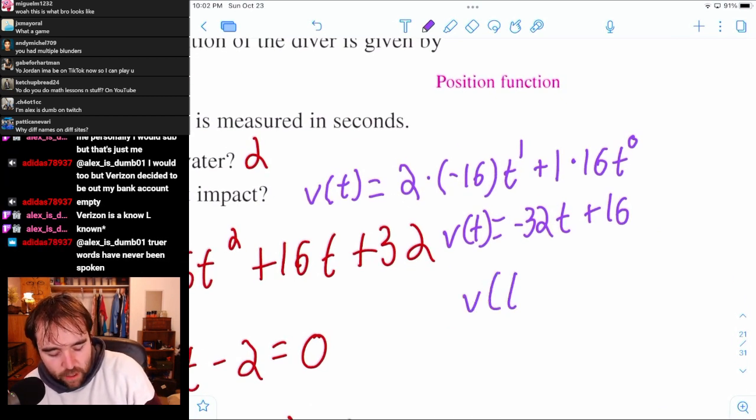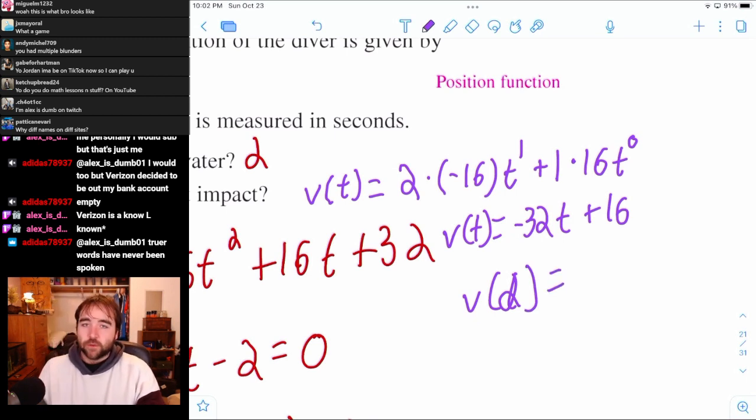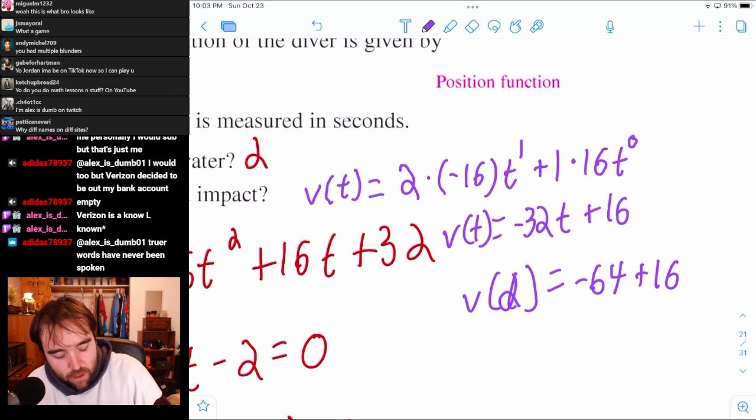So that's what we're going to do is we're going to plug in T equals 2. We're going to say V of 2 is negative 32 times 2, negative 64, plus 16. And then negative 64 plus 16, that's like 64 minus 16. So that's like negative 48.